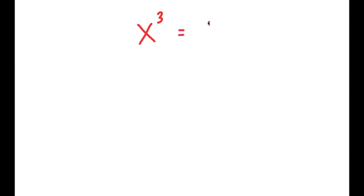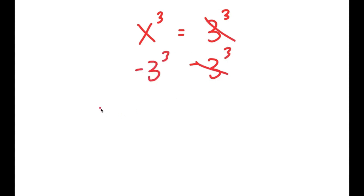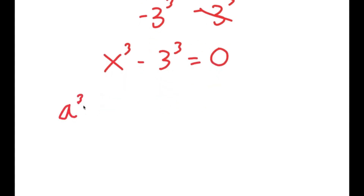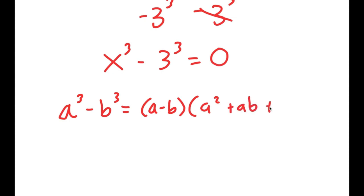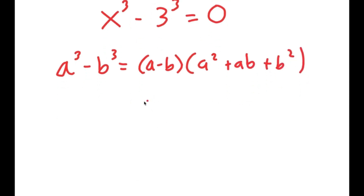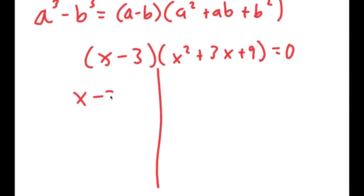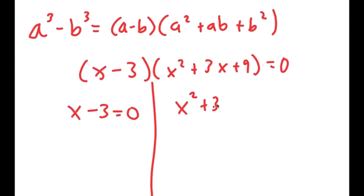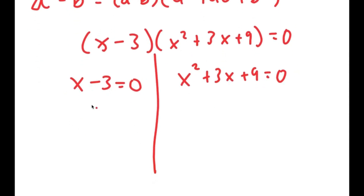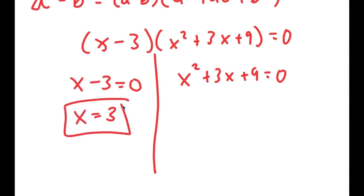In this video, I'm solving the equation x to the power of 3 equals 3 to the power of 3. To solve this, I'll subtract 3 to the power of 3 from both sides to get x to the power of 3 minus 3 to the power of 3 equals 0. Using the difference of cubes formula — a cubed minus b cubed equals a minus b times a squared plus ab plus b squared — this becomes x minus 3 times x squared plus 3x plus 9 equals 0. This gives two equations: x minus 3 equals 0, so x equals 3.